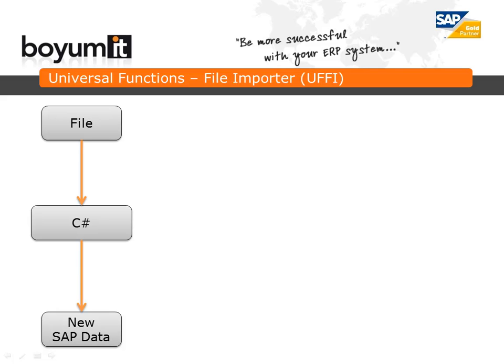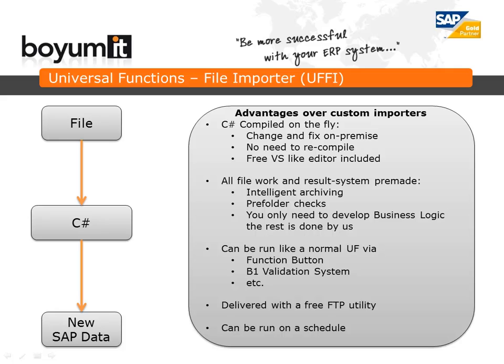UFI is made as a developer tool as it requires SDK and C-sharp knowledge. UFI however gives you, as a developer, certain benefits and also lowers the implementation time of a project. The C-sharp is compiled on the fly so that you can change and edit the code on-premise and there is no need to recompile an add-on. We have also included a free Visual Studio-like editor for easier code editing. One of the biggest advantages is that we have made all the file logic for you — an intelligent archiving function that handles archiving, logging, checking that a folder is writable, etc. — so that you only need to create the business logic. UFI can also be run like a normal UF and on a schedule.